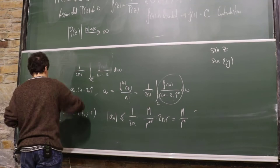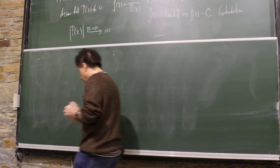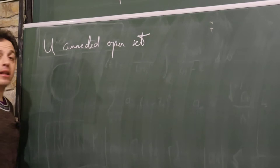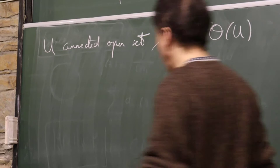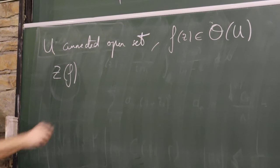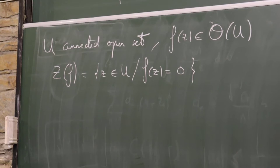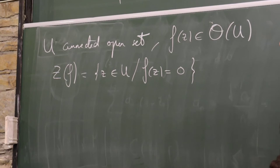Assume U is a connected open set and F is a holomorphic function on U. Denote Z(F) the set of zeros of F. This set can be empty. Since F is continuous, Z(F) is a closed set in U.